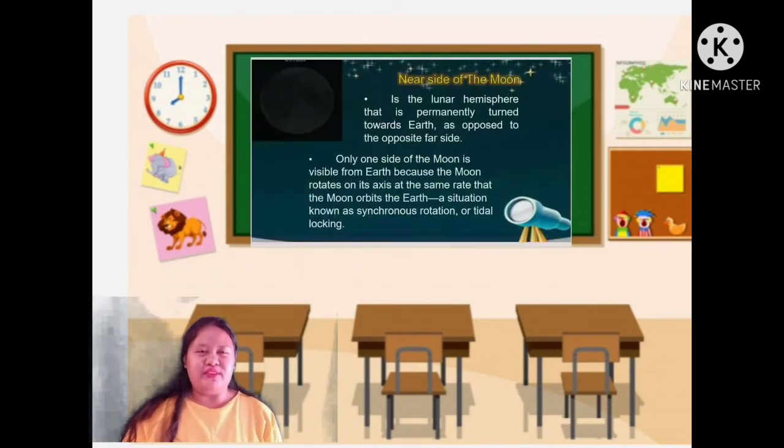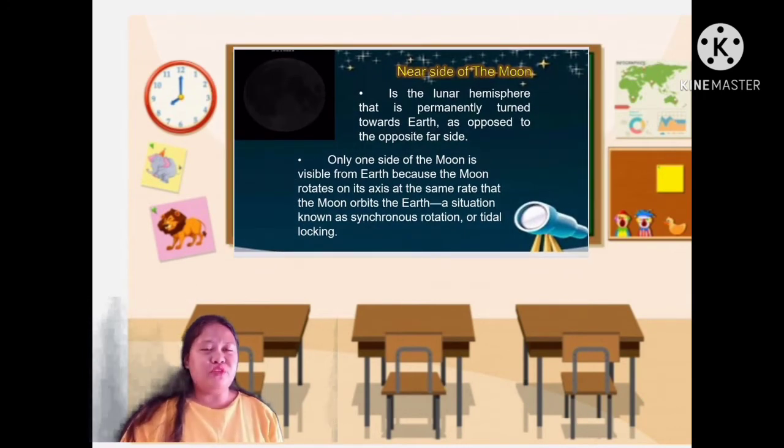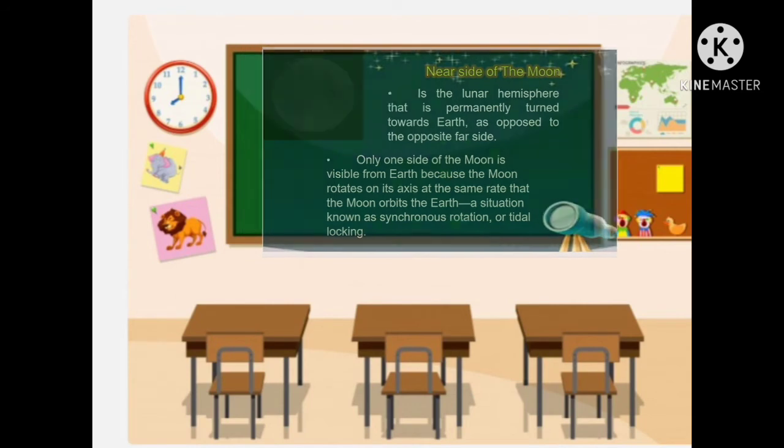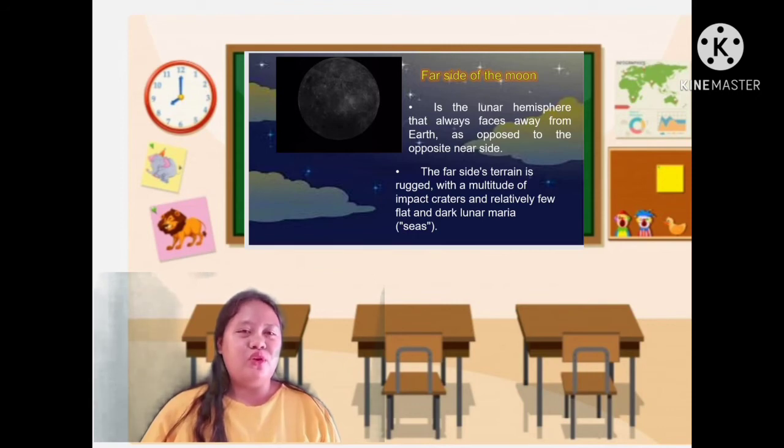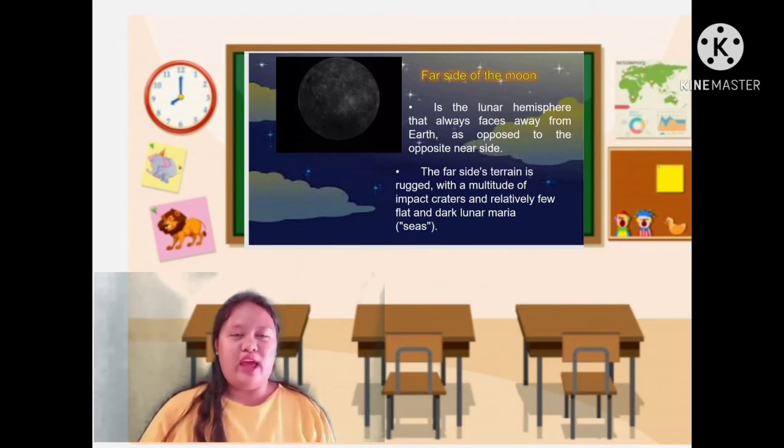Nearside of the moon: The nearside of the moon is the opposite of the far side of the moon. It is the only visible side of the earth that can be shown. The far side of the moon is the opposite of the nearside of the moon. Also, it has multitude impact craters and a few flat areas.